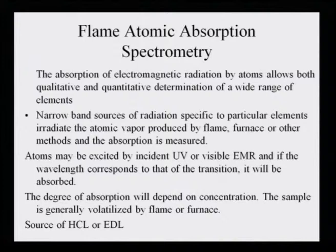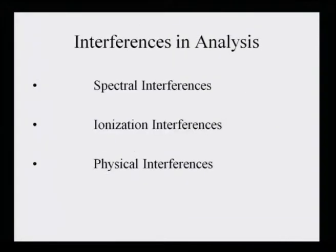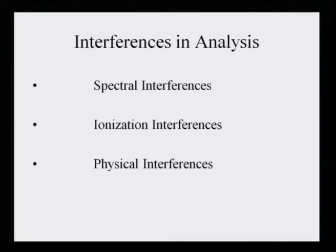The sample is generally volatilized by flame or furnace and the source lamp is a hollow cathode lamp or electrodeless lamp. However, when such analysis is being done, it is not always foolproof. There are always interferences, and understanding how to avoid these interferences is also a challenge for the analyst. The interferences in such analysis are spectral interferences, ionization interferences, and physical interferences.